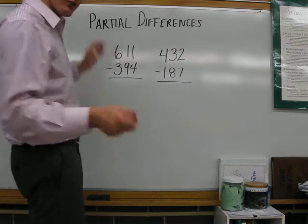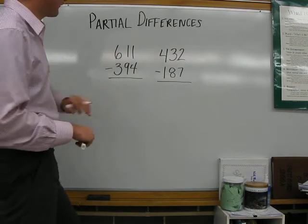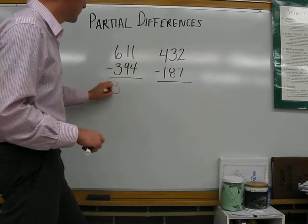Now that we've had time to take a look at this, let's do it together. 600 minus 300 is positive 300.